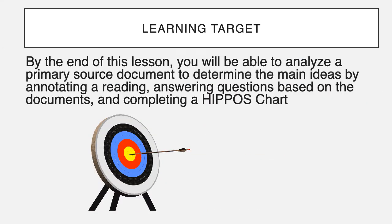By the end of this lesson, I want you to be able to analyze a primary source document to determine the main ideas by annotating a reading, answering questions based on these documents, and completing what is called a HIPPOS chart. That is the goal.